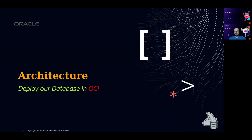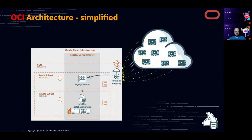The device will send data to OCI — Oracle Cloud Infrastructure. This is the architecture we're going to use: on the internet, devices connect to OCI using the internet gateway to a compute instance where MySQL Router is installed. MySQL Router retrieves all the data and sends it to the MySQL Database Service, because MDS doesn't have a public IP for security reasons. You need to use VPNs or MySQL Router to connect.